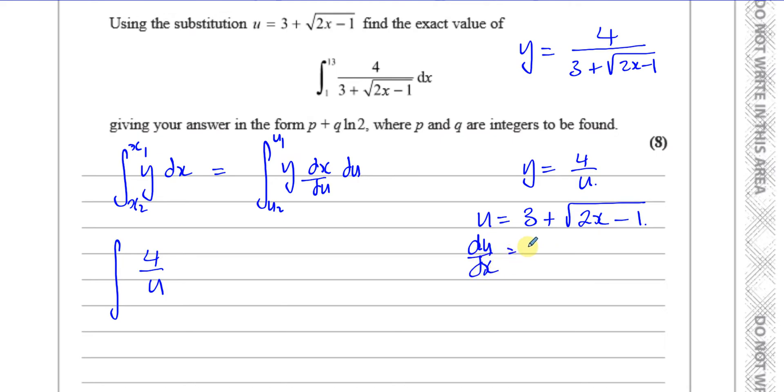To differentiate that, I'm going to have to use the chain rule. du/dx is going to be a half times 2x minus 1 to the power of minus a half, and then you multiply by the differential of what's inside, which is 2. So du/dx is going to be 1 over the square root of 2x minus 1. Then we'd have to replace the x. It's going to be hassle. This is going to make life a lot more difficult. I'm going to make life easy for myself.